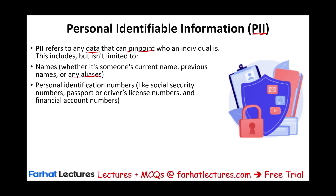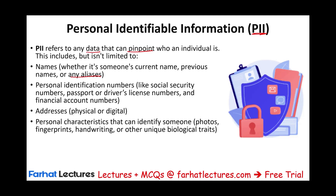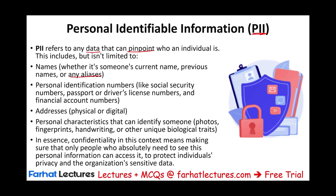PII also includes personal identification numbers such as Social Security numbers, passport numbers, driver's license numbers, state IDs, and financial account numbers. It includes your address, whether that's a physical street address or a digital address like an email address. Personal characteristics such as photos, fingerprints, handwriting, or any other biological trait are also considered PII. In essence, confidentiality in this context means making sure that only people who absolutely need to see this PII can access it, in order to protect individual privacy and the organization's sensitive data.